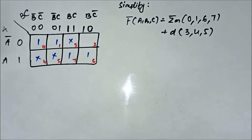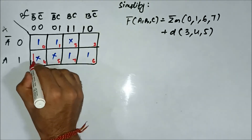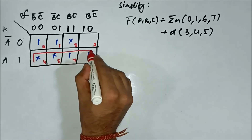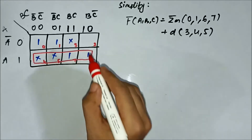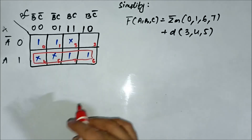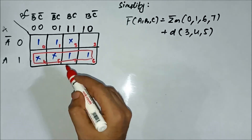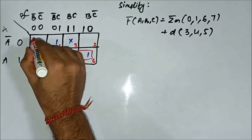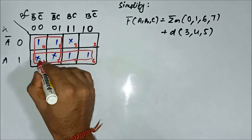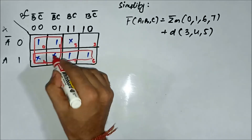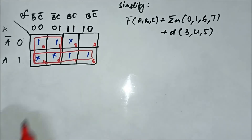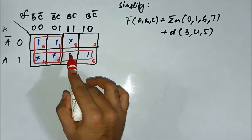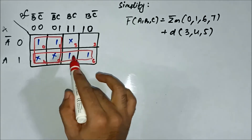Now we have to form groups. One quad can be formed with cells 4, 5, 6, and 7. Next, we can form a quad involving cells 0, 1, 4, and 5. By forming these groups, we have covered all the cells which were marked as 1.